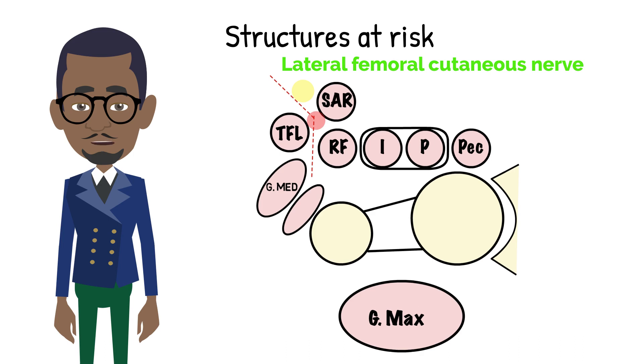The ascending branch of the lateral femoral circumflex artery must be ligated in the gap between sartorius and tensor fasciae latae.